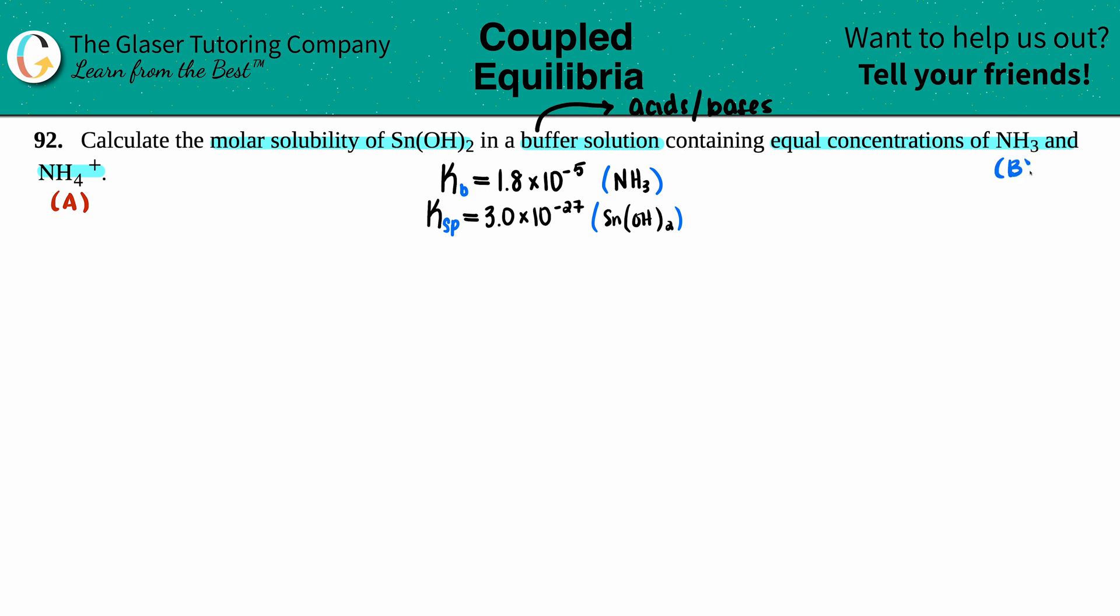I went to the back of the textbook to find the Ka or Kb value. I did find a Kb value for ammonia, which is NH3, which is 1.8 times 10 to the negative fifth.